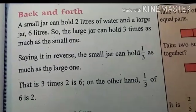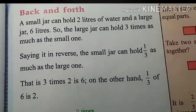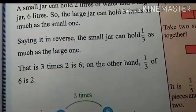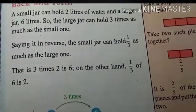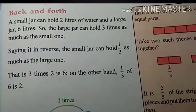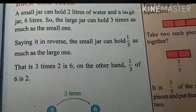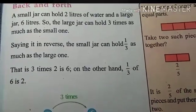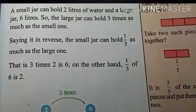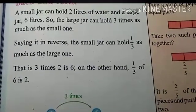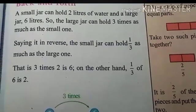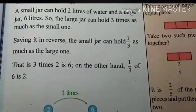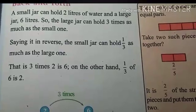A small jar can hold 2 litres of water and a large jar 6 litres. So the large jar can hold 3 times as much as the smaller one.